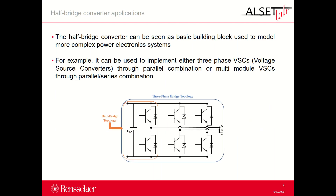Talking about the applications, the half-bridge converter can be seen as a basic building block used to model more complex power electronics systems. For example, it can be used to implement either three-phase voltage source converters through parallel combination, or multi-module voltage source converters through parallel-series combination. In the figure of this slide, you have an example of the parallel combination of half-bridge converters to build up a three-phase, three-wire, two-level voltage source converter, like a STATCOM, that is a static synchronous compensator.